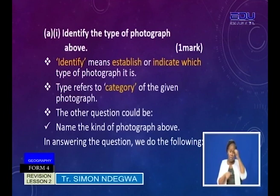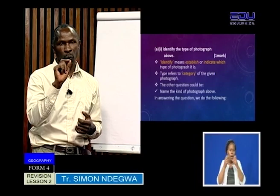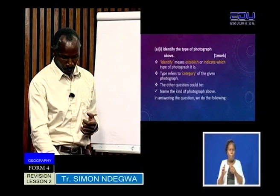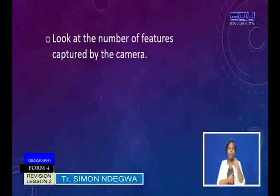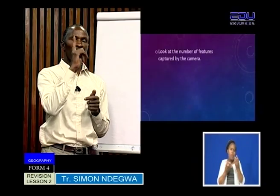Remember, we want to know what kind of photograph this is. Number one: look at the number of features captured by the camera. Identify the number of features — either there are few, either it is just one, or there are many. That already gives you a hint as to the type of photograph this one is.